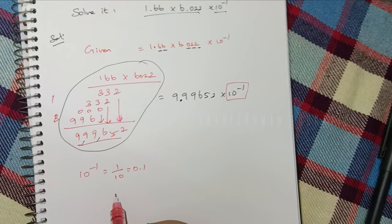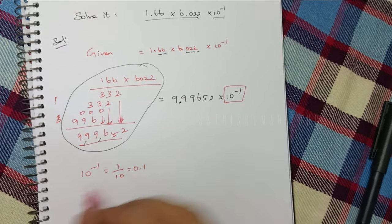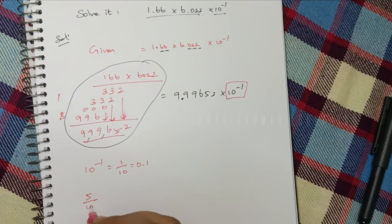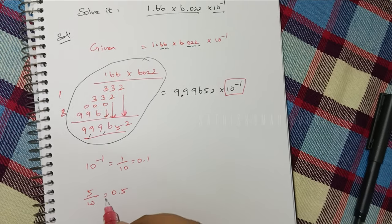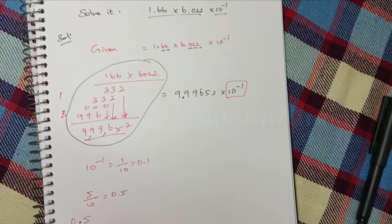If you look at this as well, 5 by 10 is equal to 0.5.